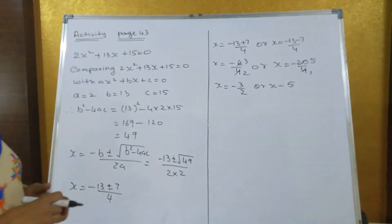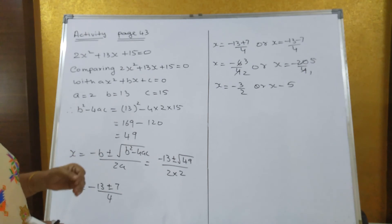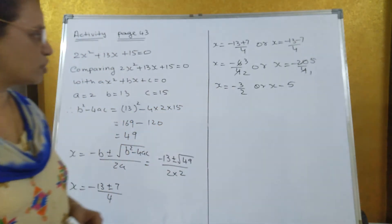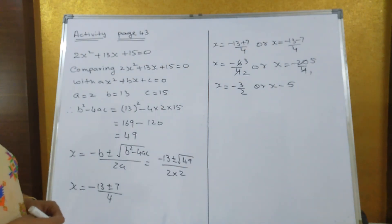Now if you solve by factorization method also, you will get the same value. And if you solve by completing the square method also, you will get the same value. You can try that factorization and completing the square method.